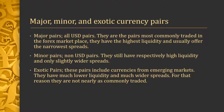The minor pairs are the non-USD pairs. They still have respectively high liquidity and only slightly wider spreads. The exotic pairs include currencies from emerging markets. They have much lower liquidity and much wider spreads.